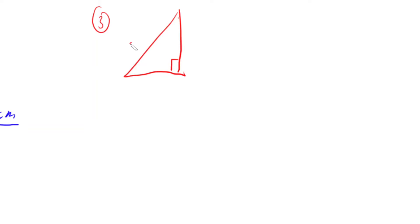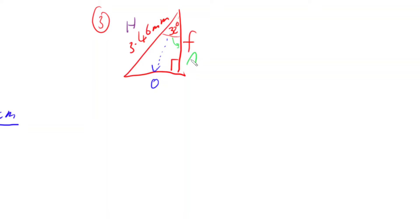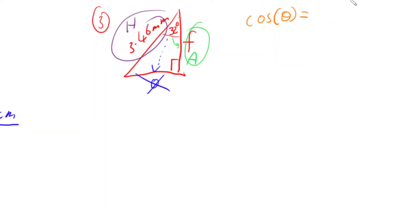Let's look at a third problem: a right-angled triangle where one side is 3.46 millimetres, the angle is 32 degrees, and the unknown side is labelled F. Labelling the triangle: this side is the hypotenuse, the opposite side is below, and the adjacent side is F. I don't have anything about the opposite — I have the adjacent F and the hypotenuse 3.46.